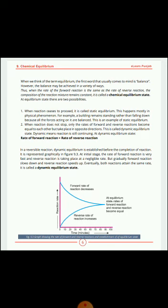When we think of the term equilibrium, the first word that usually comes to mind is balance. However, balance may be achieved in a variety of ways. When the rate of forward reaction is the same as the rate of reverse reaction, the composition of the reaction mixture remains constant — this is called the chemical equilibrium state.